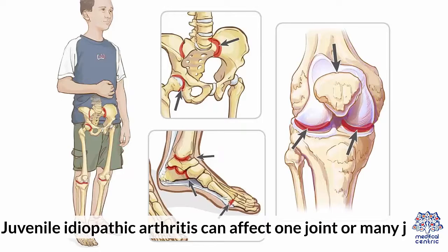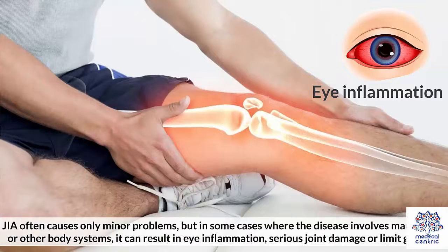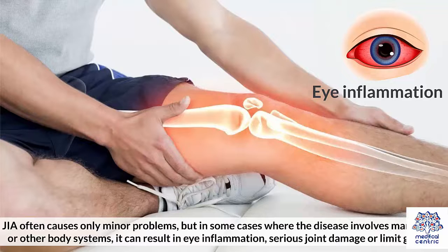Juvenile idiopathic arthritis can affect one joint or many joints. JIA often causes only minor problems, but in some cases where the disease involves many joints or other body systems, it can result in eye inflammation, serious joint damage, or limit growth.